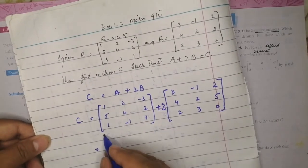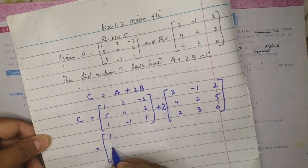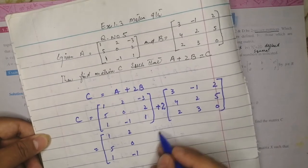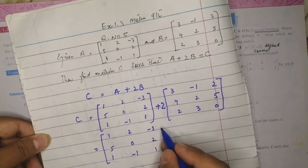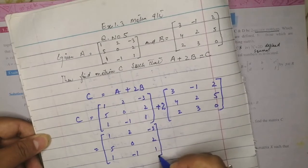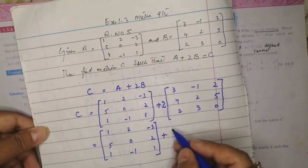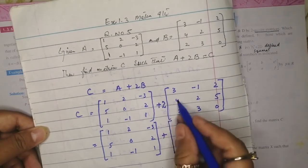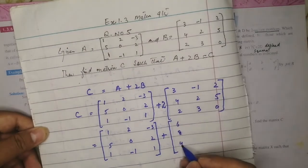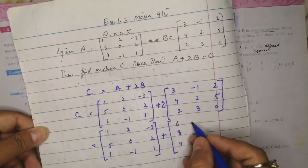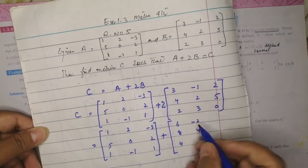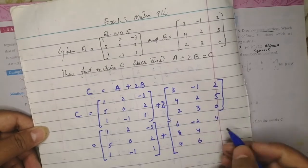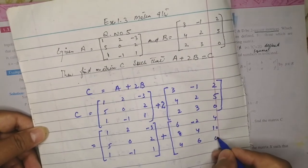First we multiply matrix B by 2. We write matrix A as it is: [1, 5, 1, 2, 0, -1, -3, 2, 1]. Then multiply each element of B by 2: 2×3=6, 2×4=8, 2×2=4, 2×(-1)=-2, 2×2=4, 2×3=6, 2×5=10, 2×0=0.